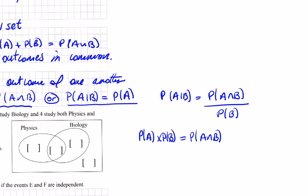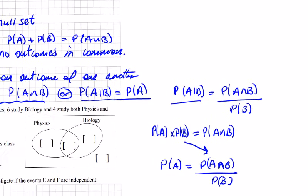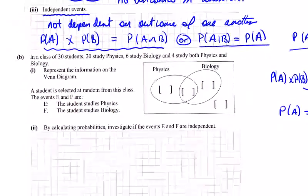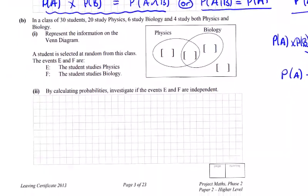If we divide by the probability of B, you can see we're going to get the probability of A given B equals the probability of A intersection B over the probability of B, which is the probability of A given B. So that's the connection between conditional probability and independent events. Okay, second part to this question, not too bad.